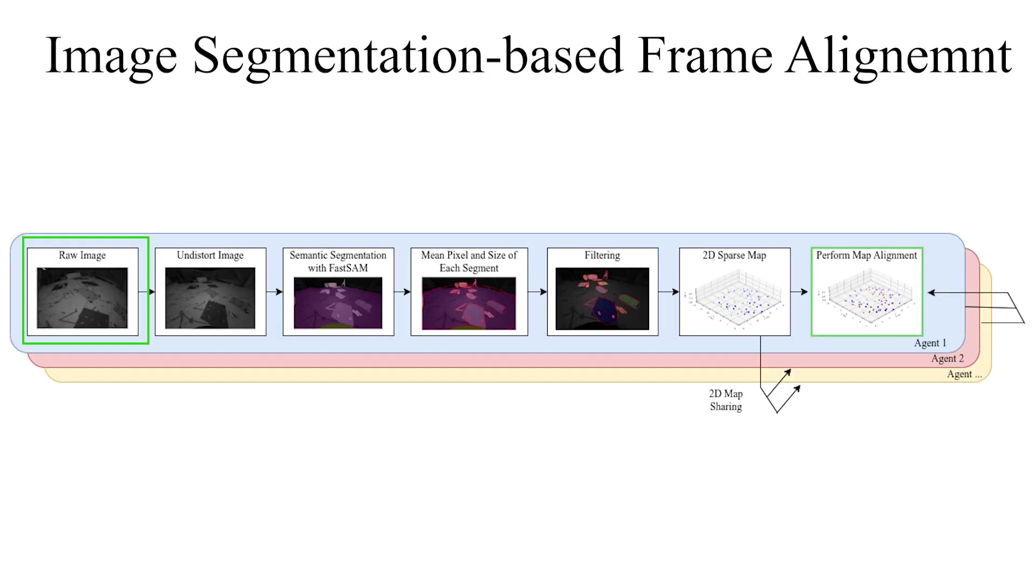Our pipeline first takes raw images and undistorts them. Then, it runs an image segmentation algorithm to extract object features from unstructured environments. The pipeline then computes centroids for each object and filters out excessively large or small objects. Finally, it maps each object onto a 2D map and performs map alignment with other agents.